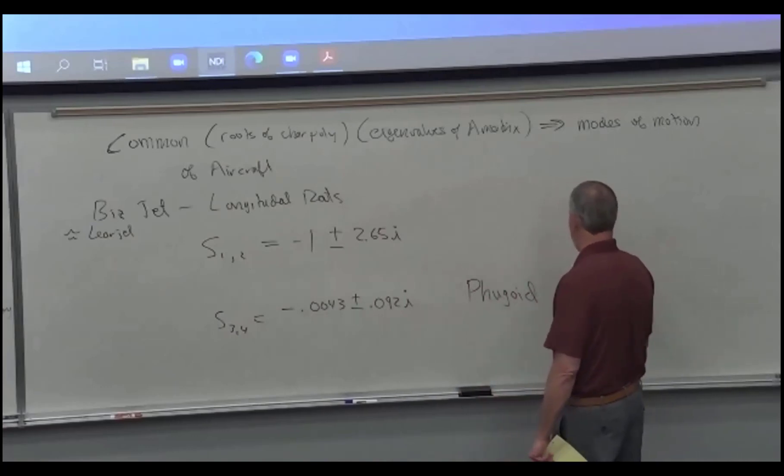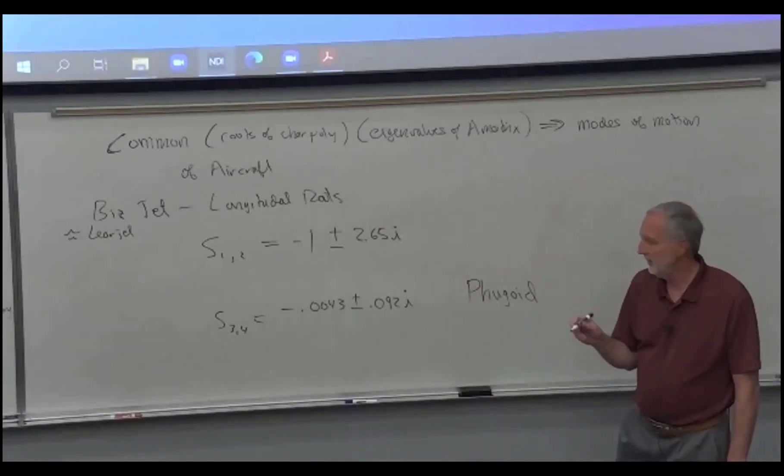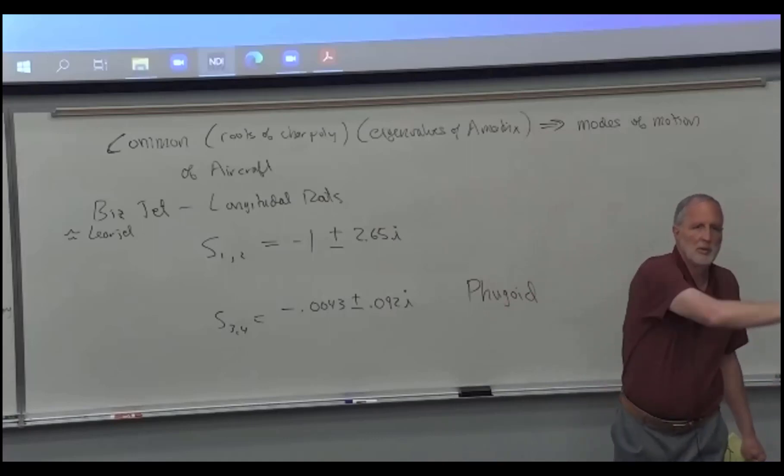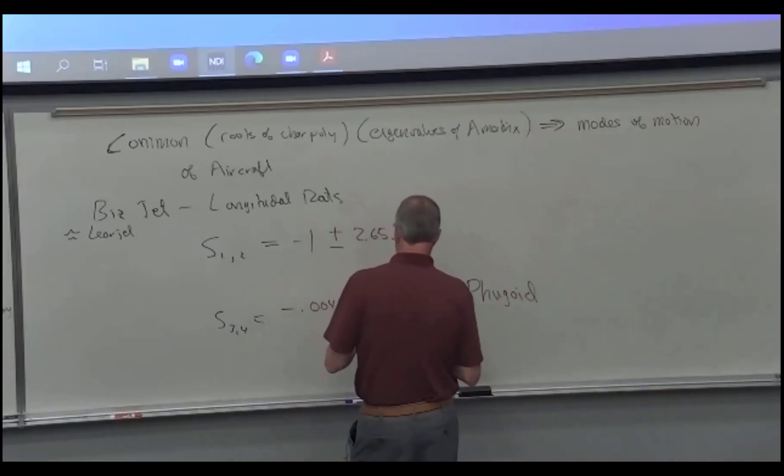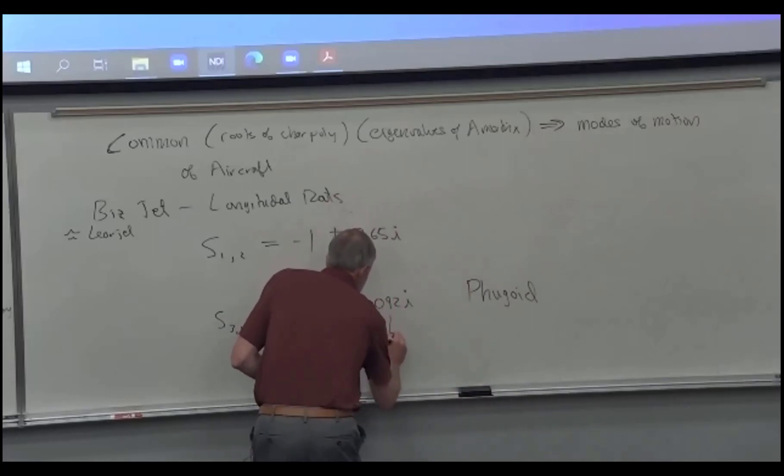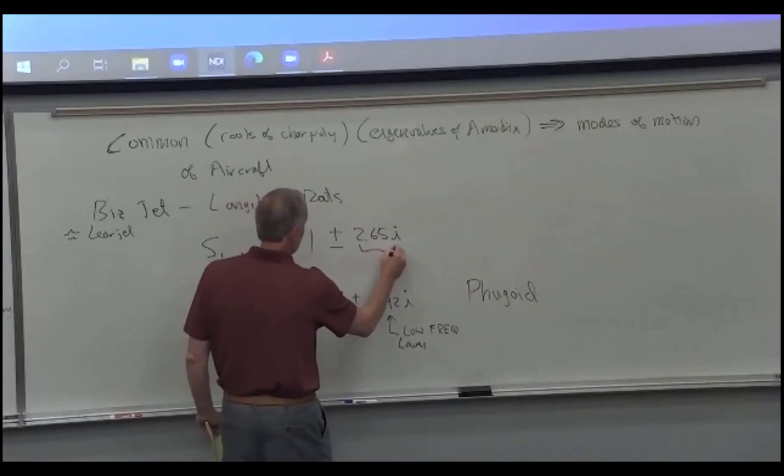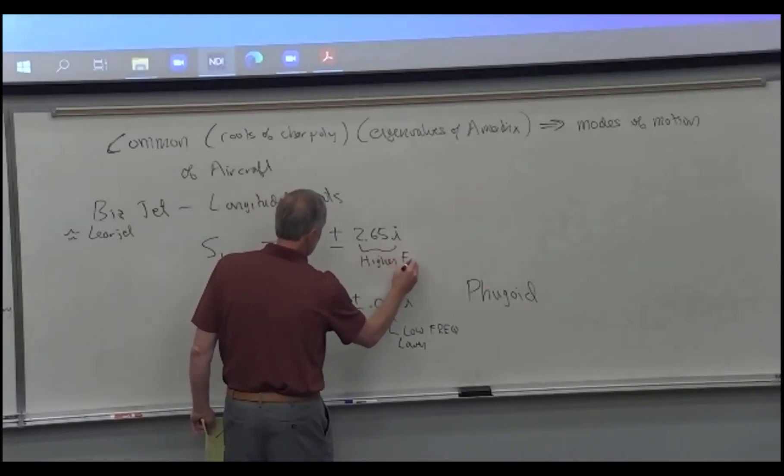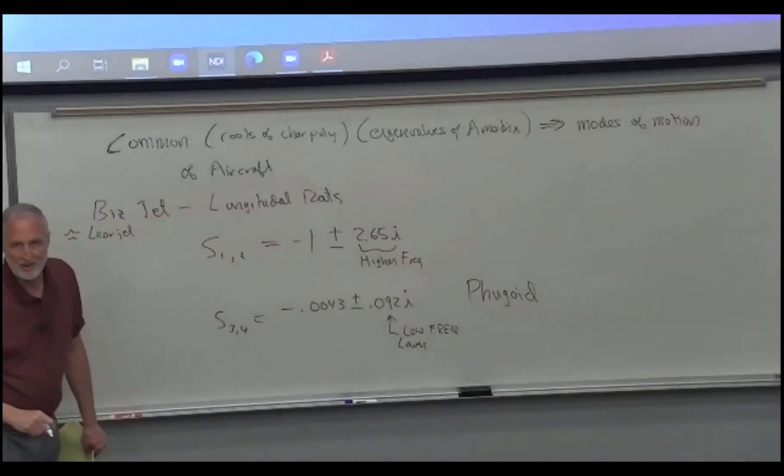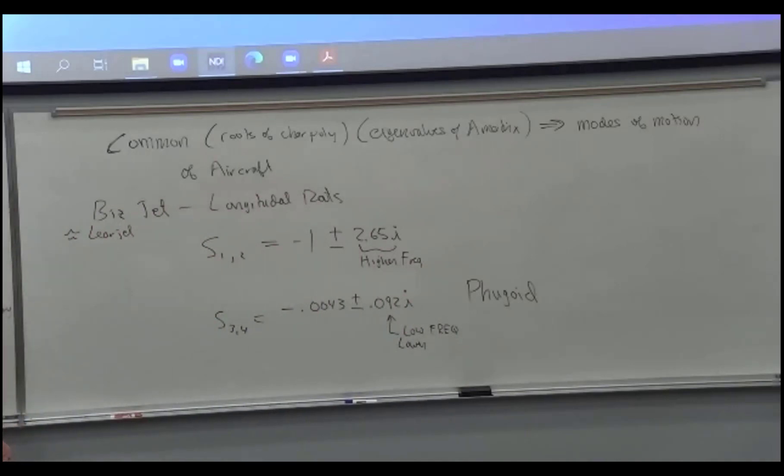This one's called the Fugoid, and that's actually a Greek word that means motion. This is the most obvious one that you see in the airplane. It takes a while to develop, and it's the airplane going through the air, up and down. So they notice this motion first. And it's characterized by a low frequency. I guess we should say lower, because it's lower than this one. This is a higher frequency.